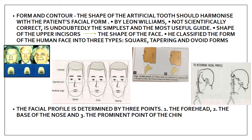This form and contour concept was given by Leon Williams. It is undoubtedly the simplest and most useful guide — the shape of the upper incisor should match the shape of the face. He classified the human facial form into three types: square, tapering (triangular), and ovoid. Depending on the patient's facial form, you select the corresponding anterior teeth form.